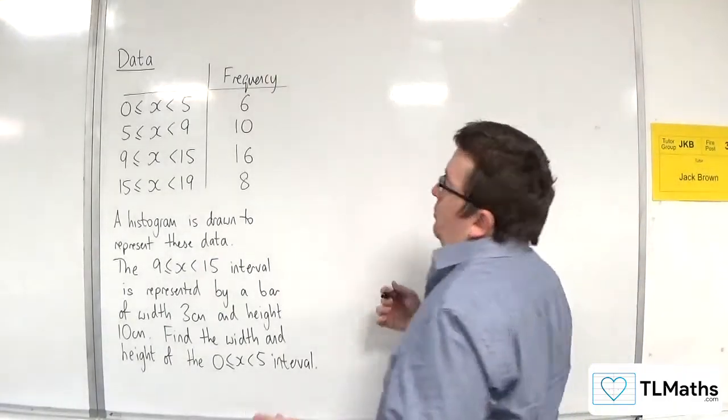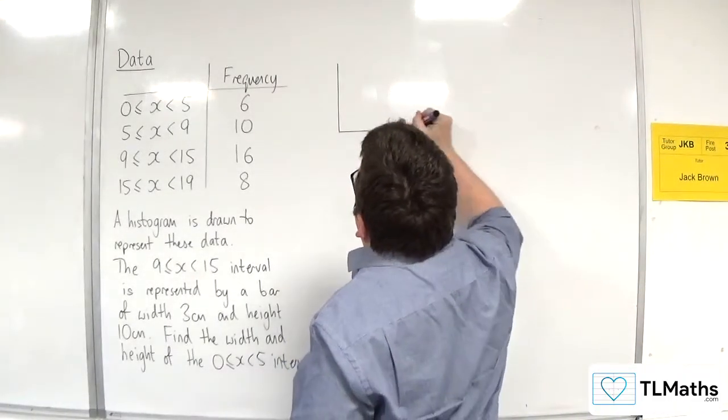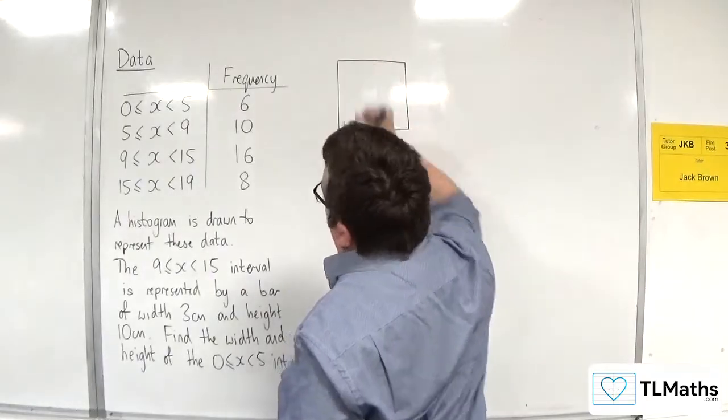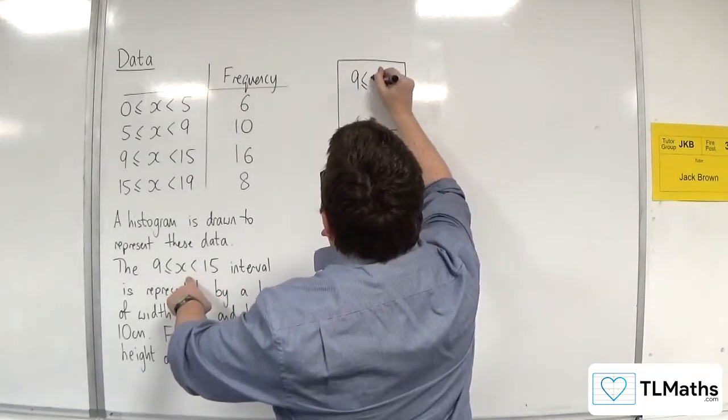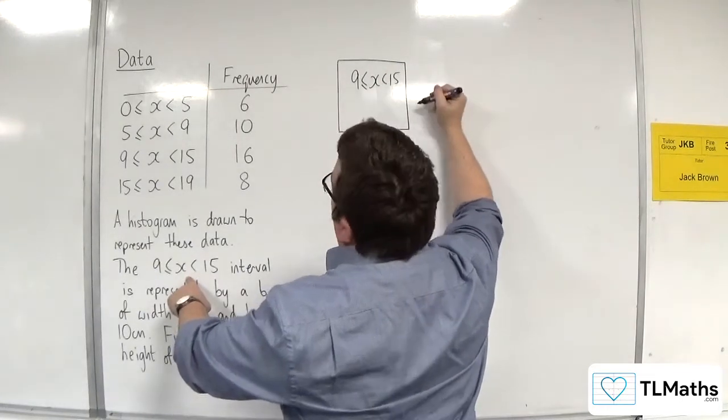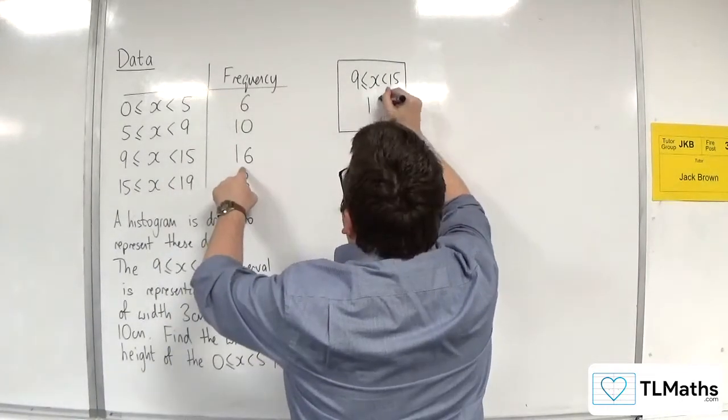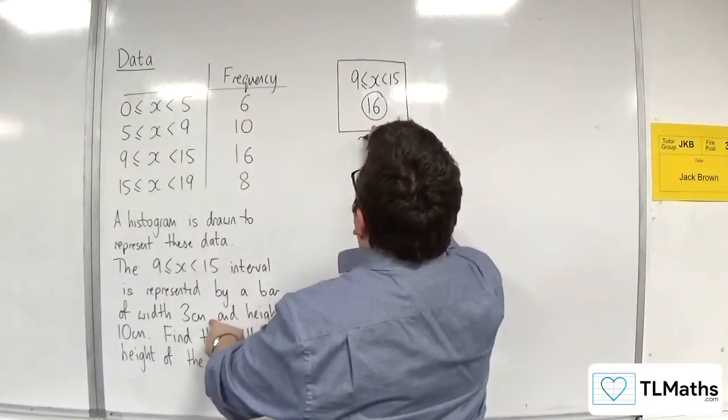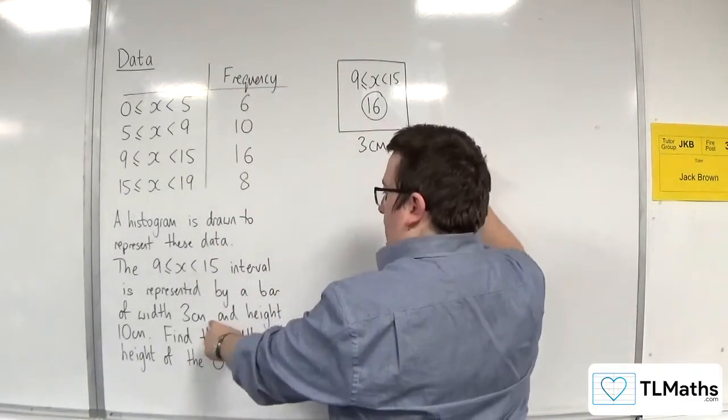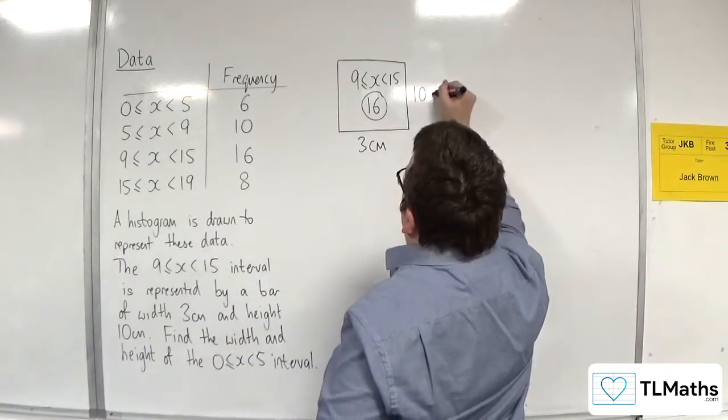Okay, so let's draw a bar to represent the 9 to 15 interval. So the 9 to 15 interval has 16 as its frequency. We know its width is 3 centimeters, and its height is 10 centimeters.